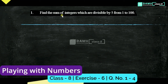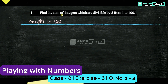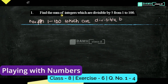Our next exercise is the first question: find the sum of the integers which are divisible by 5 from 1 to 100. So, the numbers from 1 to 100 which are divisible by 5 — what are those?